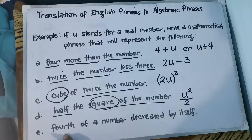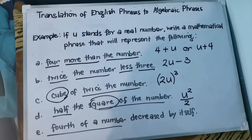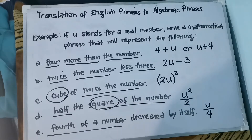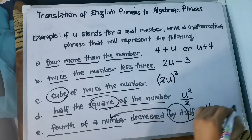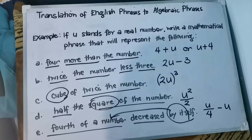For our last example E: fourth of a number decreased by itself. Fourth of a number involves division, so we write it as u/4. Decreased by involves subtraction, and by itself refers to u. So we write it as u/4 − u. I hope you understood examples A to E, and I will be giving more examples.